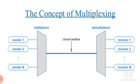Multiplexing is the concept of sending more than one signal through a single medium, and at the receiver side those signals are separated. Simply put, signals from different channels are transmitted over a common transmission line, where the time spacing between samples of one channel is occupied by another channel. This improves the utilization of the channel.